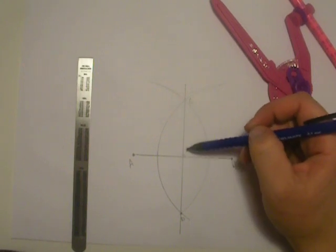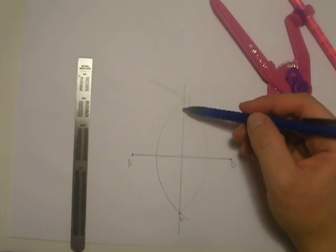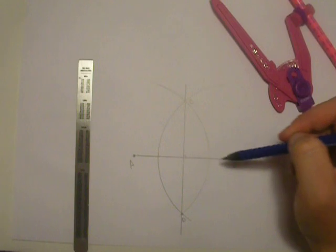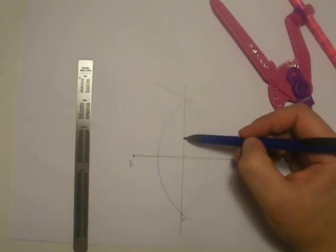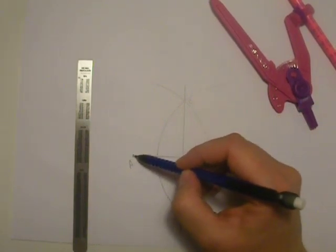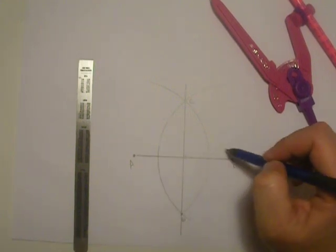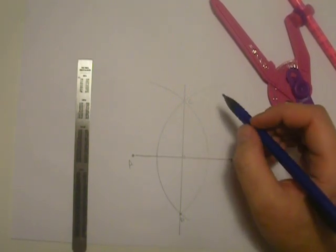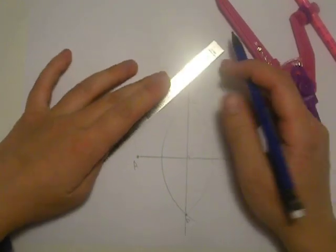The definition of a bisector is a line which is the set of points that are equal distance from A and B. So if I have a point here, this point to A and this point to B are the same exact distance. So I'm going to go with point C since I already have it.